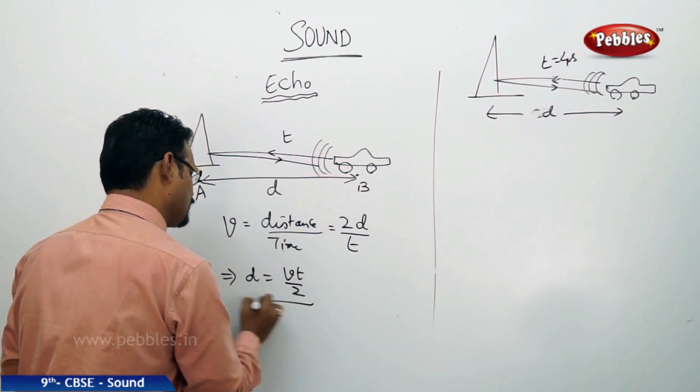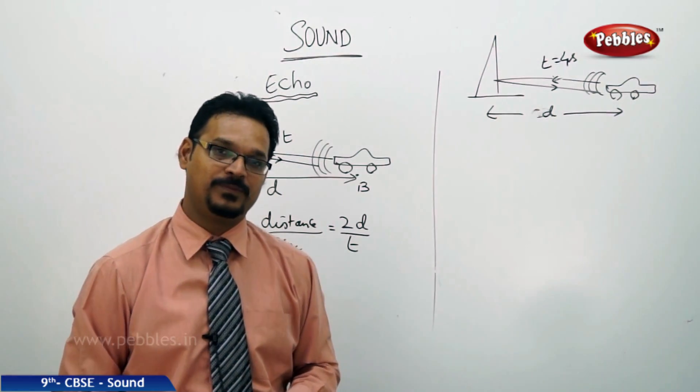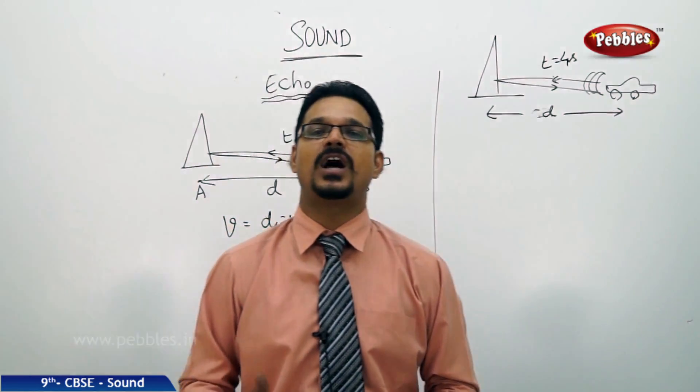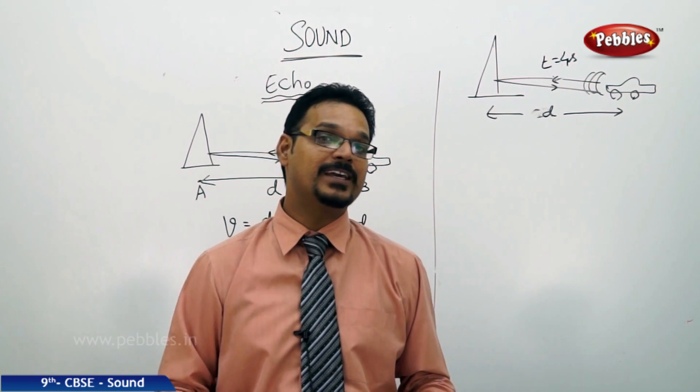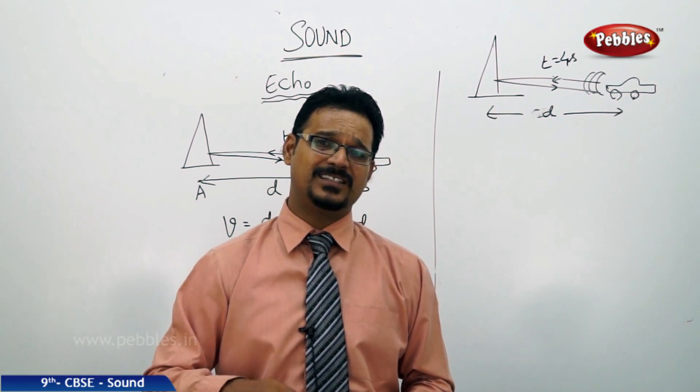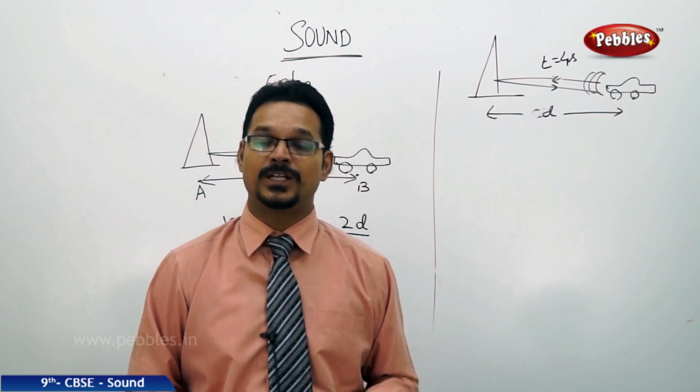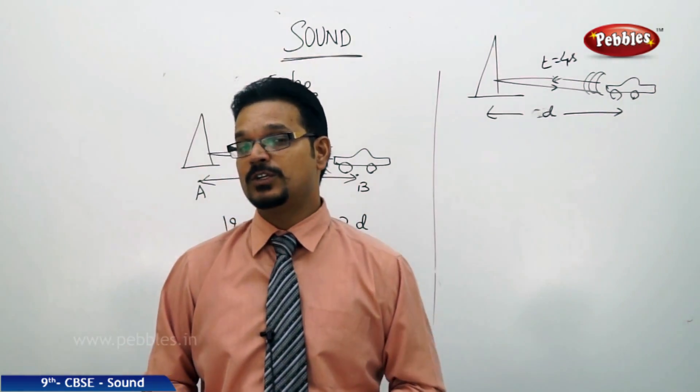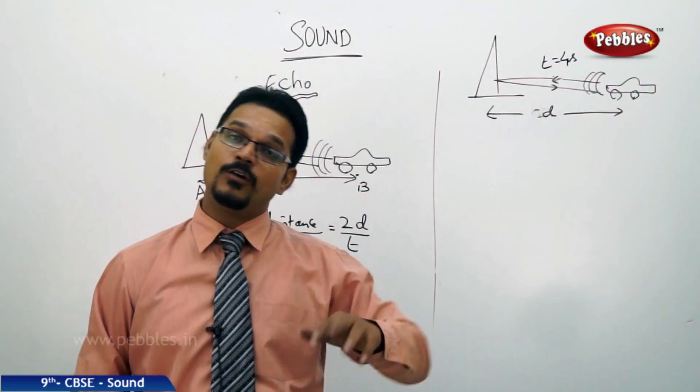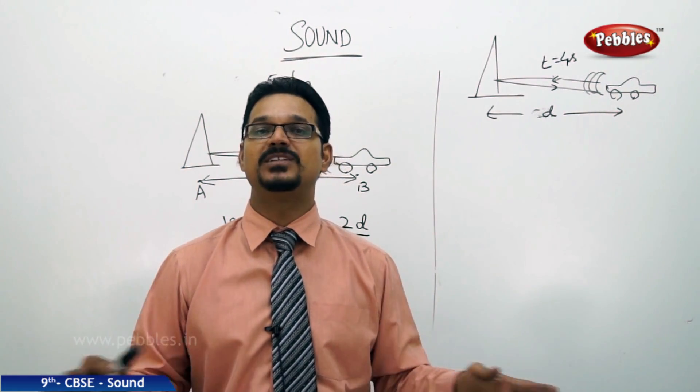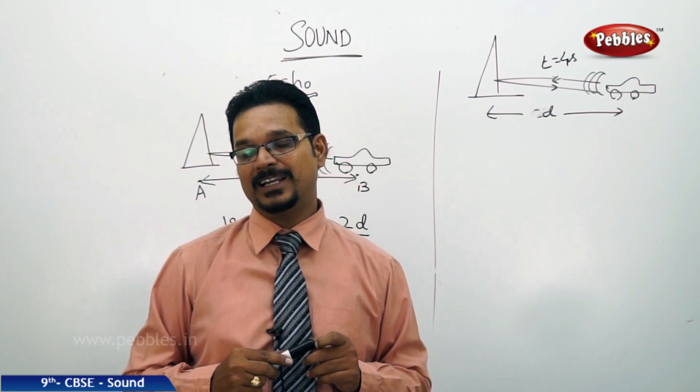This is the formula for finding minimum distance to produce echo. In this room if I shout, you can't hear any echo. That means it is not possible to produce echo in all situations. There are some conditions. That's why in the beginning I told you that you are at the peak with mountains at long distances, or you have gone to an auditorium which is empty and big. These are some conditions.